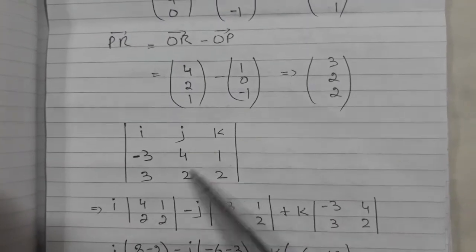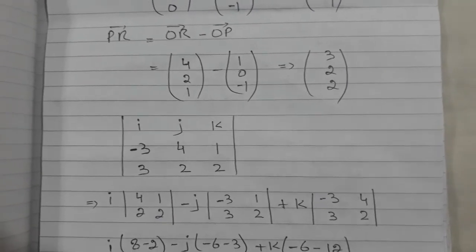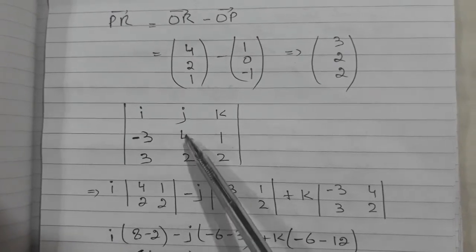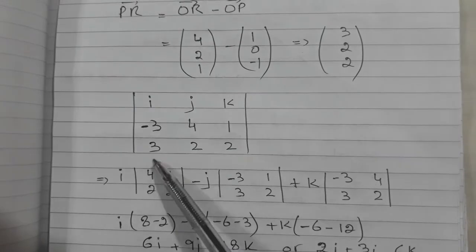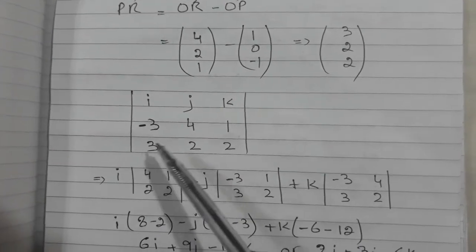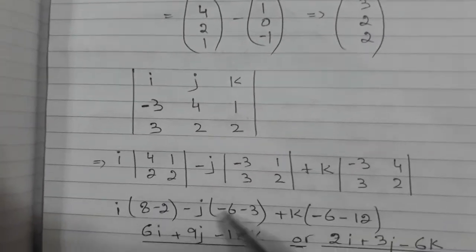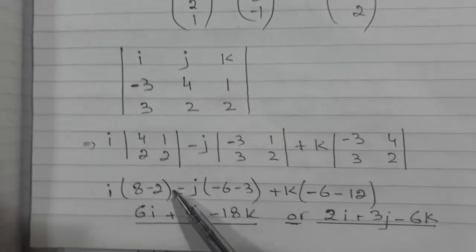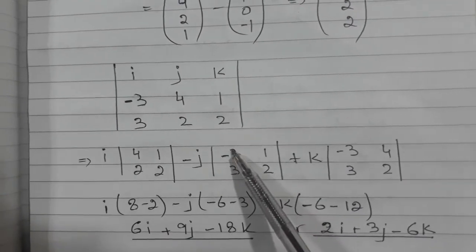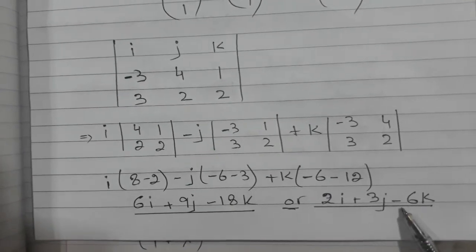So we were applying cross product here to find out the vector which will be perpendicular to the plane. So now, when I am taking minus j, I am leaving this and writing minus 3, 1, 3 and 2. You can see here. When I am writing k, these two I leave out and I write only these four numbers. And now, I am applying the concept of like we do 4 into 2, minus 2 into 1, minus 3 into 2, minus 3 into 1. So the same concept we are applying to find out the vector.